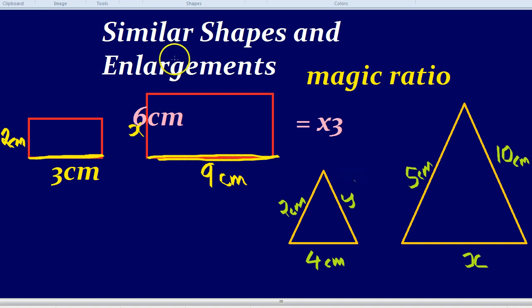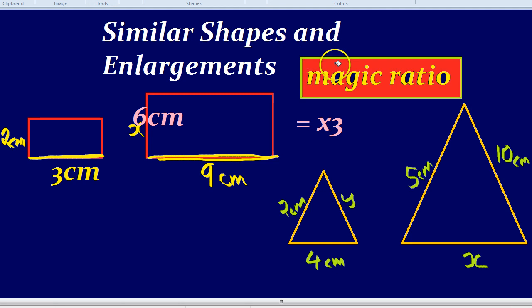Well, as always, with similar shapes, which is also just enlargements, that's another way of thinking about it, just an enlargement, you need to find the magic ratio. So let's highlight that, the magic ratio. Now, in this case, there's different ways of finding the magic ratio. The way I like to do it is the bigger side divided by the smaller side.